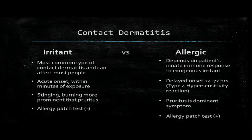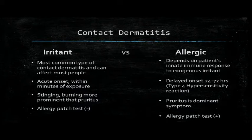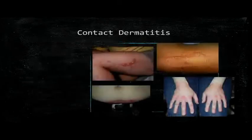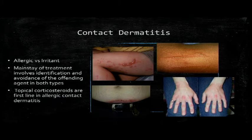Contact dermatitis has two types: irritant and allergic. Irritant is the most common type — most people would be affected if they put their hands in caustic irritants. The allergic type depends on the patient's innate sensitivity to the trigger. Irritant contact dermatitis can be caused by chemical things like cleaning agents and detergents, or even water, and physical irritants like paper dust and soil. Allergic contact dermatitis triggers include poison ivy, nickel, latex, food, and medications. The mainstay of treatment is identifying and avoiding the offending agent, and topical corticosteroids can be used for itching.